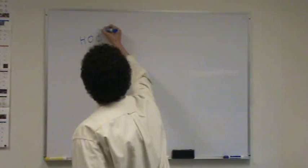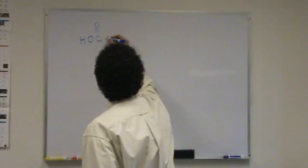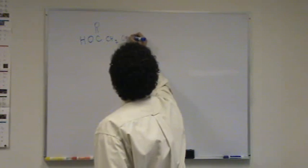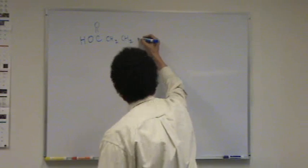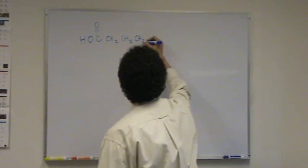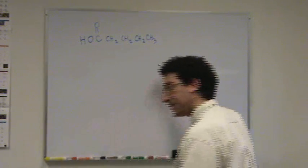H-O-C, and then CH2, CH2, CH2, CH2, CH3. This is 1D in the text.